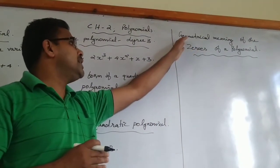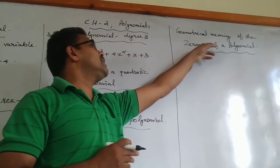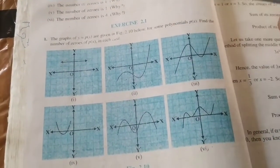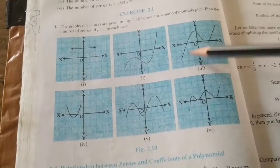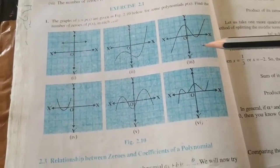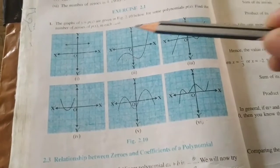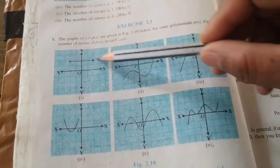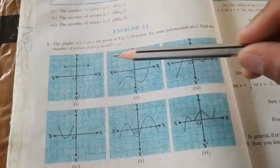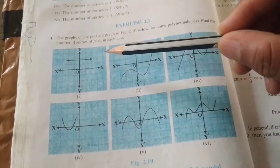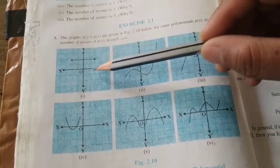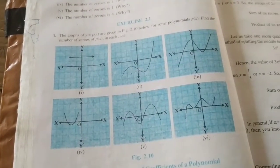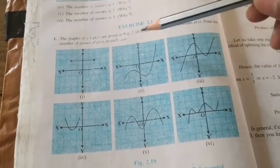We are going to calculate the first exercise, Exercise 2.1. Here we can see the graphs of different quadratic polynomials, linear polynomials, and others. Our task is to calculate the number of zeros. Number of zeros means how many times the graph is touched on the x-axis. First question: the graph is never touching the x-axis, that is why the number of zeros is 0.